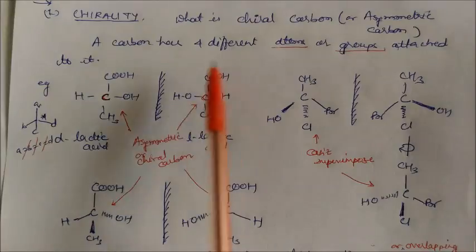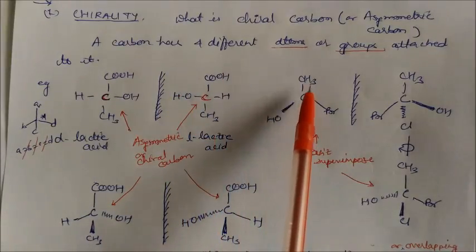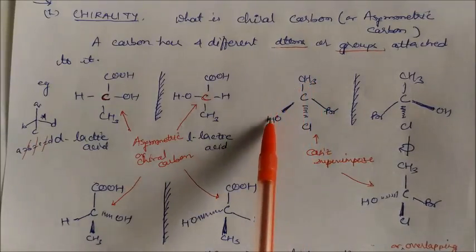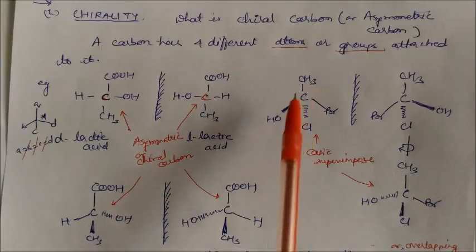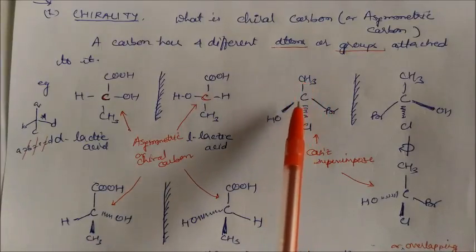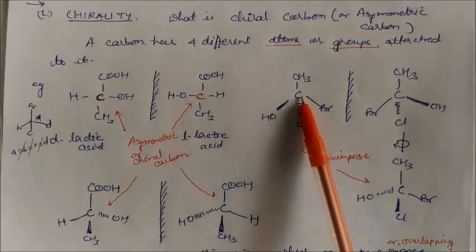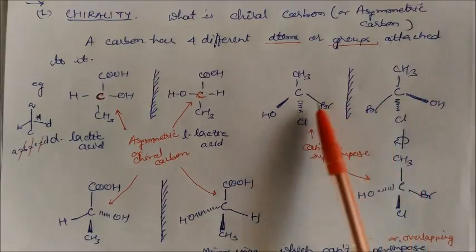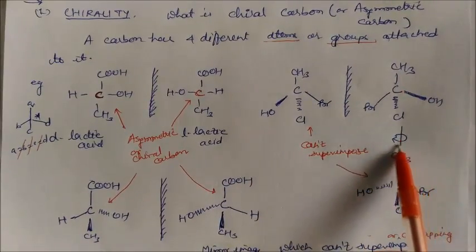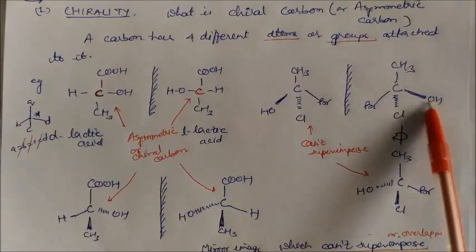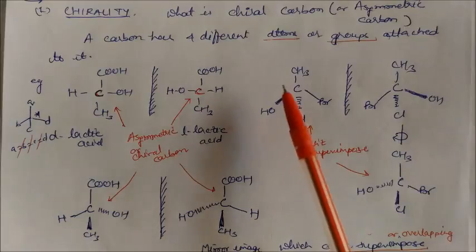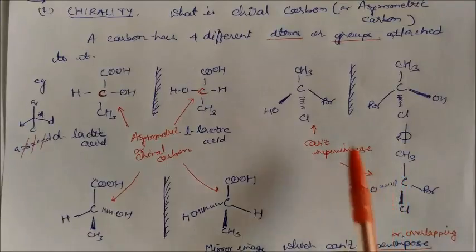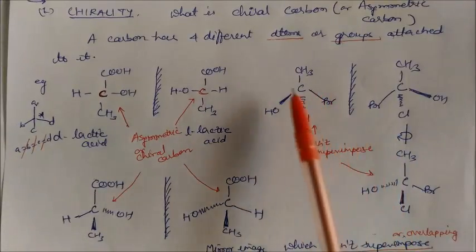If you take the mirror image of this carbon, you will get this type of structure, which again has four different groups. Similarly, in this case, you can see OH, Br, and Cl — Br and Cl are atoms. So again, this carbon has four different atoms and is the chiral carbon. If you take the mirror image, this mirror image cannot be superimposed. On 180-degree rotation, OH and Br will be interchanged, and these two structures cannot be superimposed or overlapped.